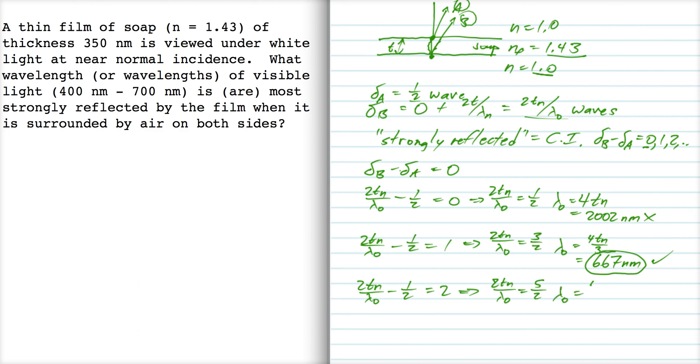So lambda-naught is four t over five, which is four hundred nanometers, which is right on the edge of acceptable.